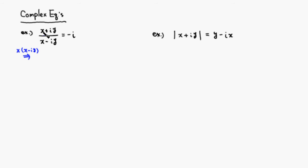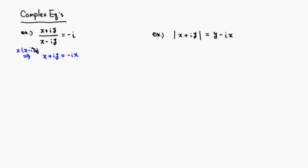So you would get x + iy is equal to — x times negative i would be -ix, and negative iy times negative i would be i squared, so it's going to be negative y.